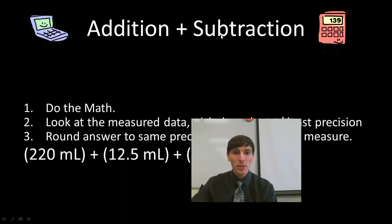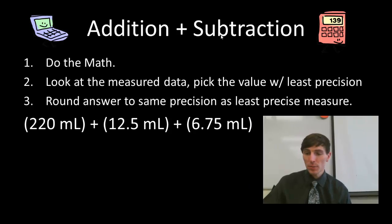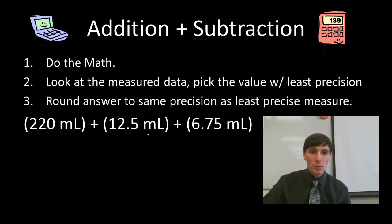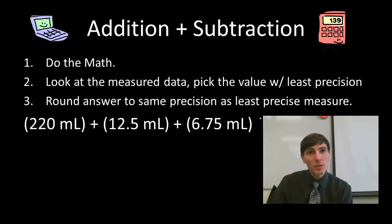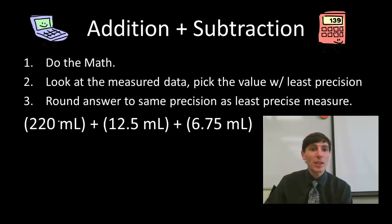The very first type of problem we're going to look at is addition and subtraction. The first step is to do the math. Here's a problem: 220 plus 12.5 plus 6.75. We can punch that into our calculator. The problem is calculators don't take into account significant figures or error in measurement. So we need to figure out which one of these three measurements has the least precision.